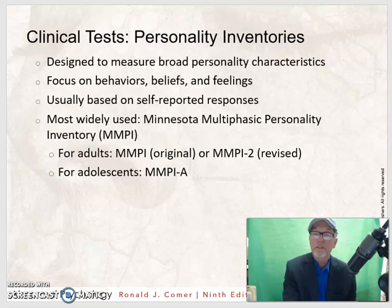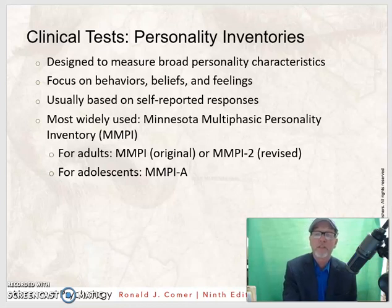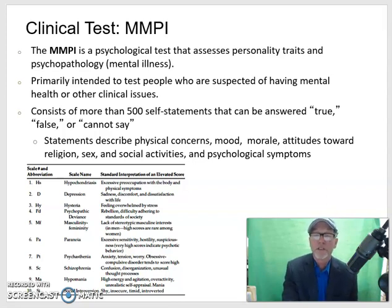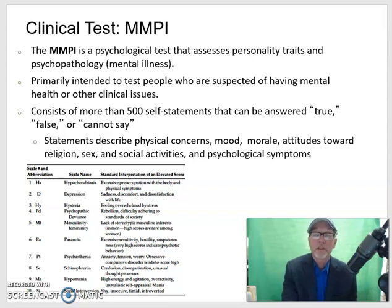Personality inventories are designed to measure broad personality characteristics, focusing on behaviors, beliefs, and feelings, usually based on the client's self-responses. The most widely used one is called the Minnesota Multiphasic Personality Inventory, or the MMPI. It's a psychological test that assesses personality traits and psychopathology — also known as mental illness — and is primarily intended to test people who are suspected of having mental health or other clinical issues. On the MMPI, there are more than 500 self-statements that can be answered true, false, or cannot say. The statements describe physical concerns, mood, morale, attitudes towards religion, sex, and social activities, and psychological symptoms.